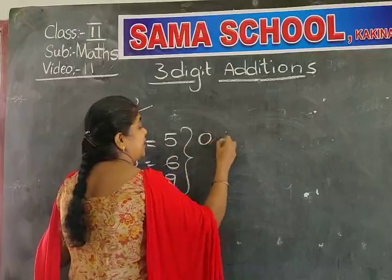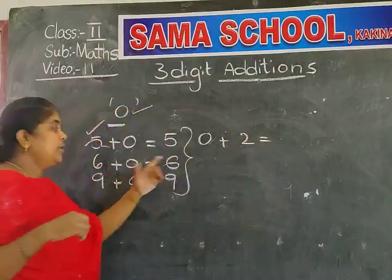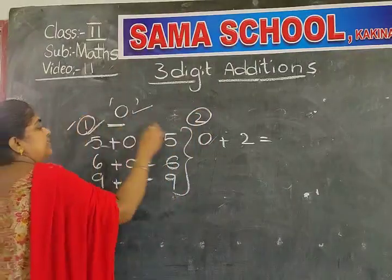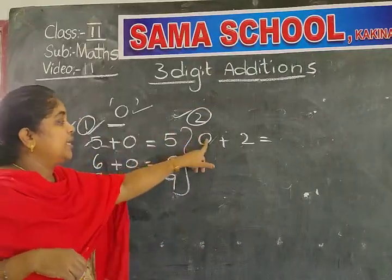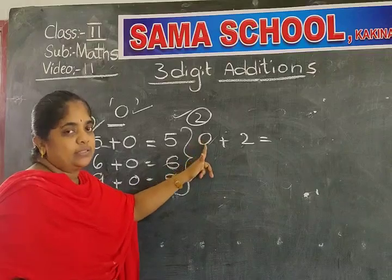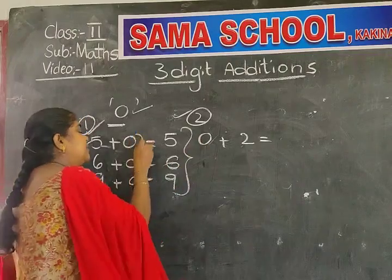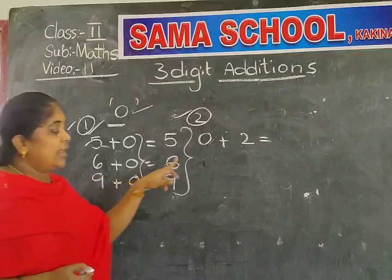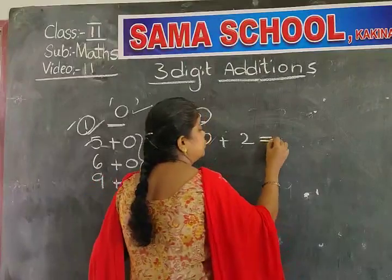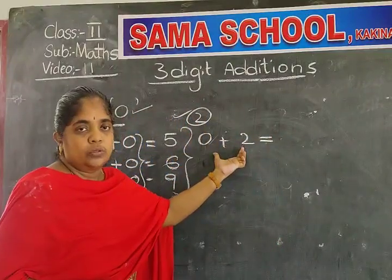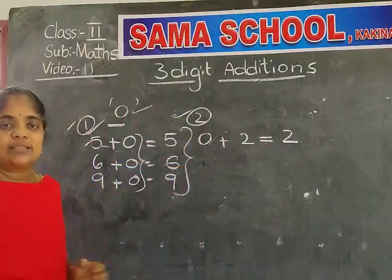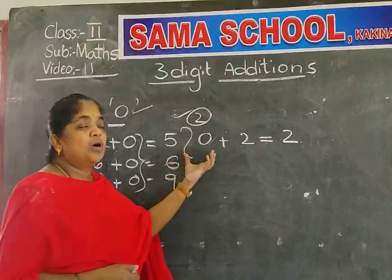In the second case, I am adding any number to zero. Here I have taken zero as the first number and I am adding numbers to zero. Zero plus two equals two only, because zero means nothing — there is no value for zero.